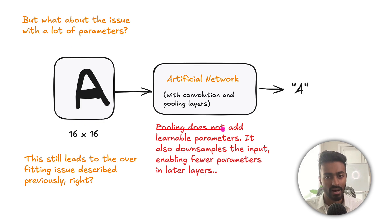Pooling also does not really add learnable parameters at all. When we're doing a max pooling, we're kind of just taking a max and it's not really adding any learnable parameters. It also down samples the input, enabling fewer parameters in later layers. So all in all, pooling doesn't add parameters and it actually helps even diminish it further too. So we don't have the issue with a lot of parameters.